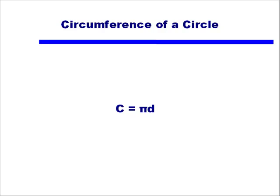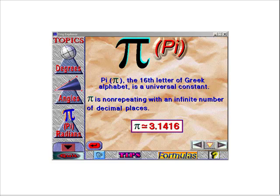Let's go back to the formula C equals πd. You've probably heard this formula before, but let's solve for this symbol π. Pi is equal to the circumference divided by the diameter. Using the software Trig Explorer, we see that π is approximately equal to 3.1416. Pi is an irrational number, a number without end in its decimal places, and it never repeats.